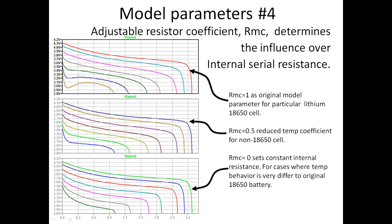The next parameter is RMC, which is a coefficient that determines internal resistor modulation. When RMC is 1, we have the original discharging curves. We can reduce RMC to 0.5 to get slightly flatter discharging curves. We can also set RMC to 0, which is a very specific case — when RMC is 0, we have no internal resistance modulation at all.